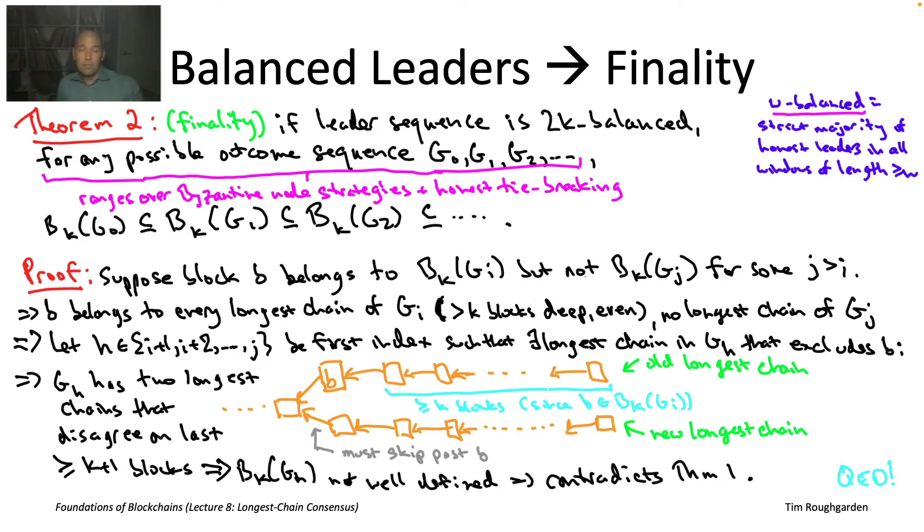To give you a forward pointer, when we start talking about permissionless consensus, both the proof of work genre in lecture nine and the proof of stake genre in lecture 12, there we're going to be choosing leaders randomly. So there's always some probability that you're going to have a very unbalanced leader sequence. But, akin to what we saw in the fourth video of this lecture, with high probability you're going to have a balanced leader sequence. And in that high probability event, you will have finality. So this theorem two will apply whenever the leader sequence meets the balance guarantee, which will happen 99% of the time. So in that sense, theorem two with randomly chosen leaders gives you probabilistic finality.